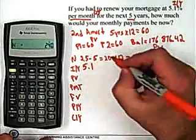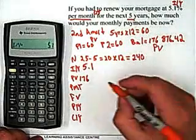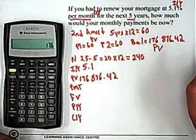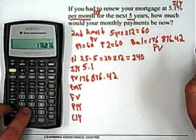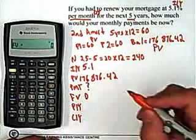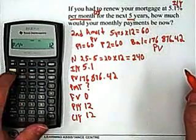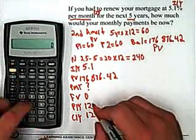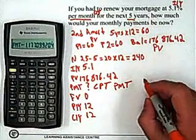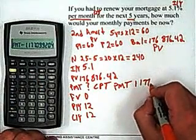The IY is 5.1. The PV is now $176,876.42. I'm going to make sure there's 0 FV. The payment is what we're looking for. PY and CY are going to remain at 12 each — we should check to make sure they are 12 and 12. Then second quit, and CPT PMT. Our new payments are $1,177.10.